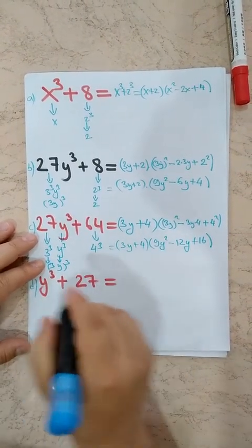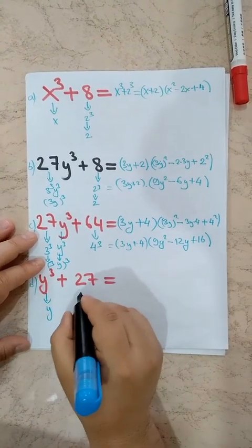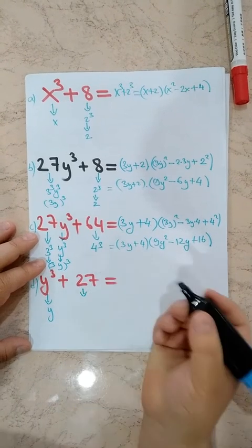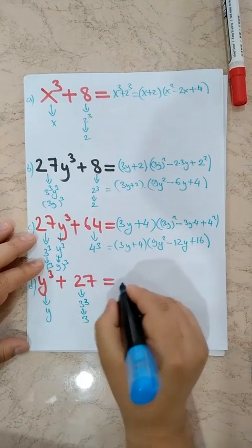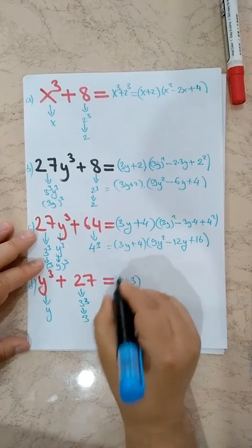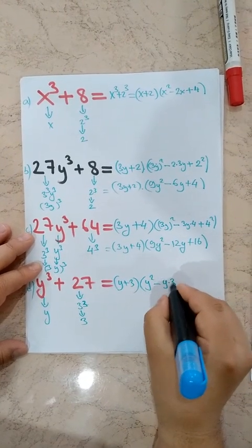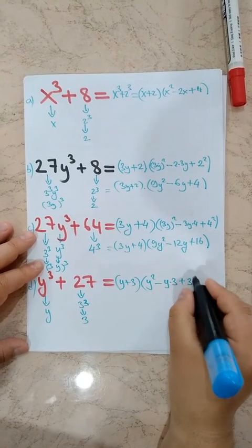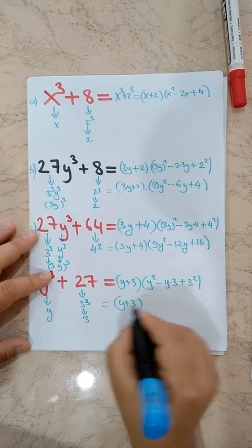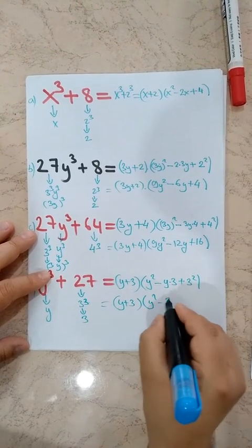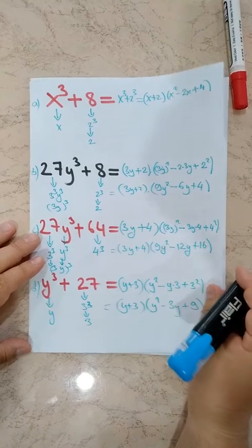Last example here: Y cubed plus 27. Our first term is Y, and 27 — which number cubed? — 3 cubed, so second term is 3. We write Y plus 3 times Y squared minus 3Y plus 9. This is the expanded form of Y cubed plus 27.